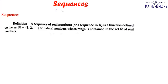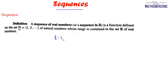Today we'll study sequences. A sequence of real numbers is a function defined on the set ℕ, which is the set of natural numbers, and whose range is contained in the set of real numbers. So any sequence is defined by a function f from natural numbers to real numbers.